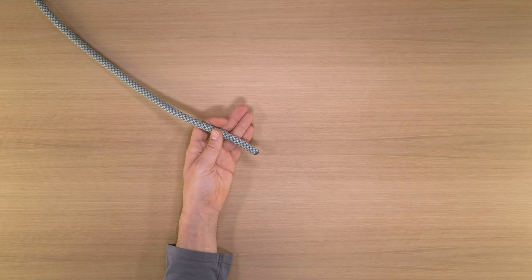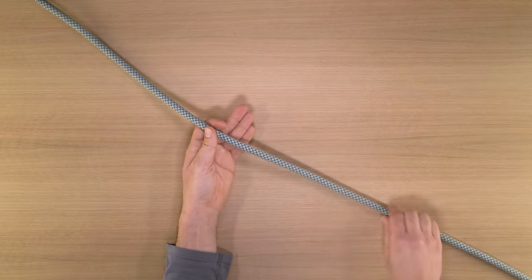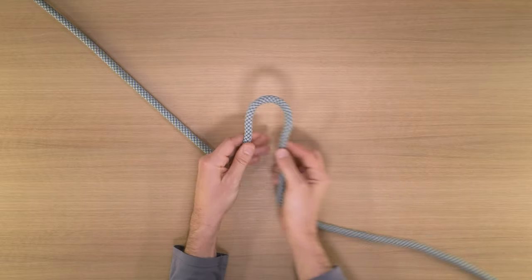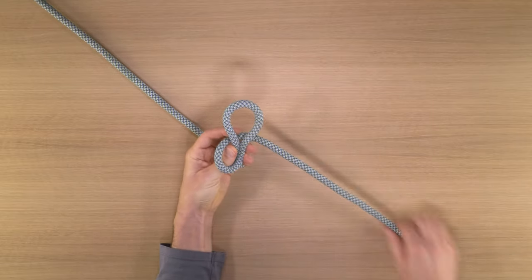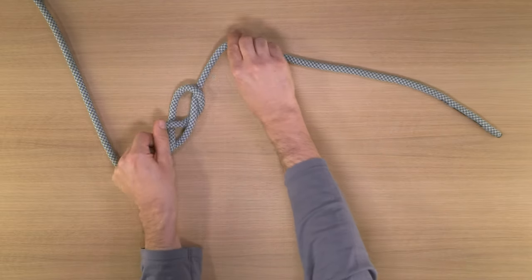Here's how to tie a figure eight follow through, which many people use to tie into the climbing rope. Start with three or four feet of rope, make a loop, wrap the rope around, poke it through. Now you have your eight.